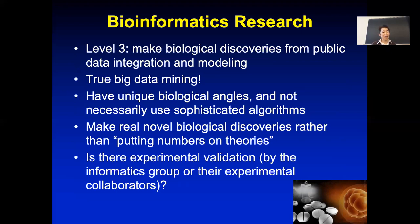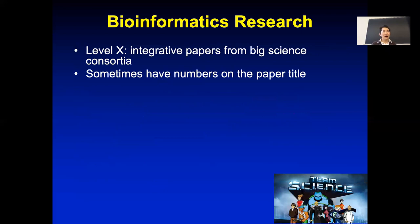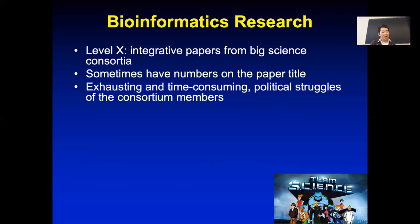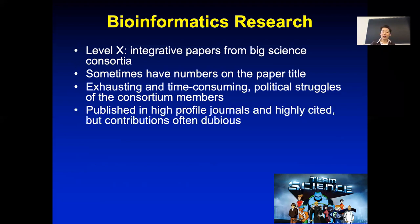You might also need experimental validation by the informatics group or experimental collaborators. Then there is level X bioinformatics: integrative papers from big science consortia — team science. Sometimes you can see papers with numbers in the title, like 'Mutation profiles of 800 AML patients.' It takes a lot of resources and is very time-consuming. There are turf fights within the consortium about who gets to be first and last author, and these are usually published in high-profile journals and highly cited because of the data.